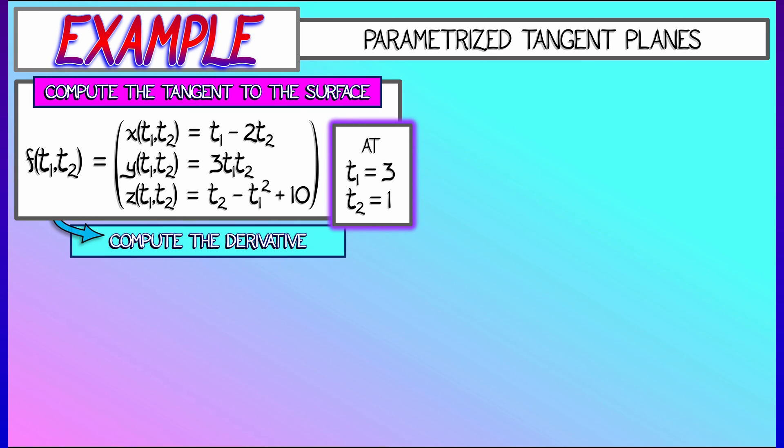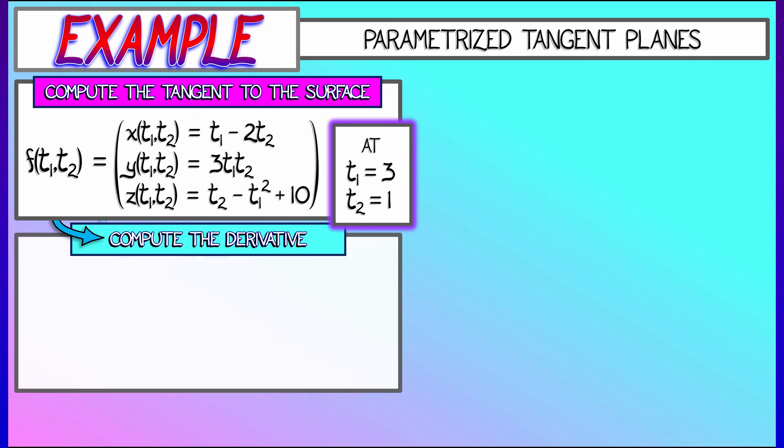Now, what do we do? We compute the derivative. Take the partials with respect to t1 in the first column, t2 in the second column. That gives us 1, 3t2, negative 2t1, and negative 2, 3t1, 1.